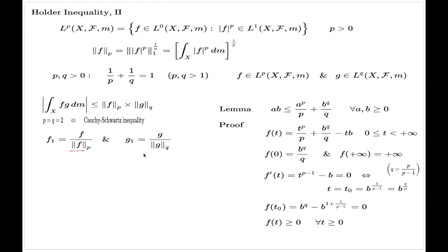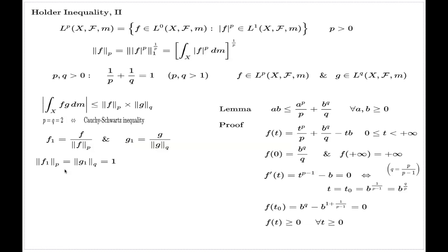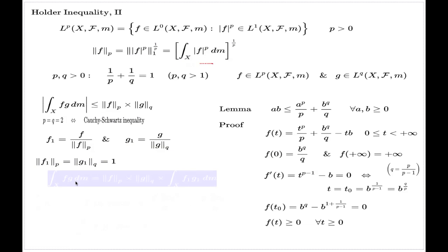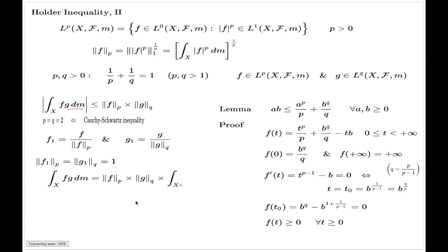So we now consider the case where both norms are non-zero. Then I can divide and introduce these auxiliary functions f1 and g1. I observe that the p-norm of f1 and the q-norm of g1 are each just 1 — it's very easy to check by applying the definition. Then the left-hand side can be replaced with an expression involving f1 and g1.